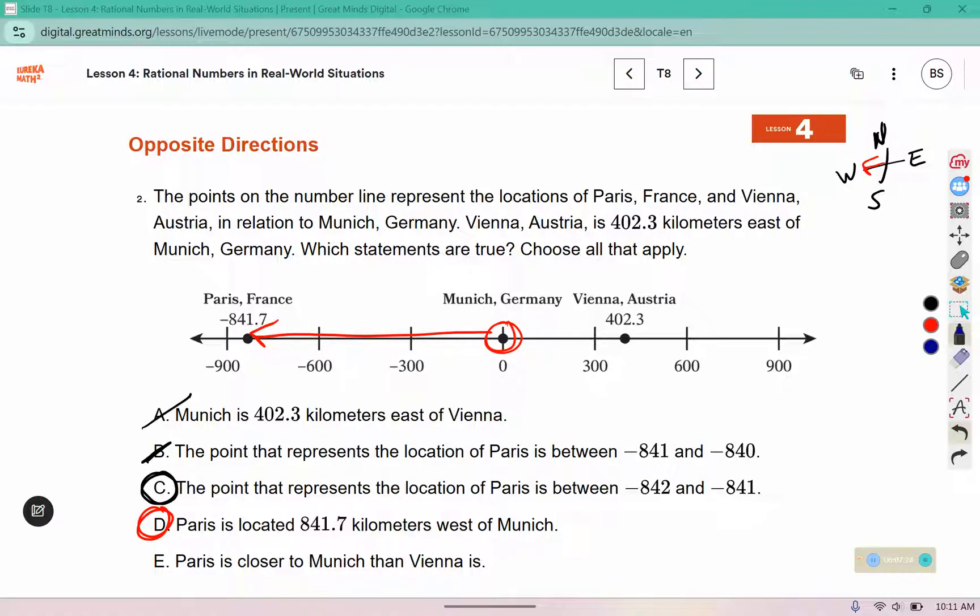Paris is closer to Munich than Vienna is. If we look at where Munich is, is this distance to Vienna or this distance to France? Which one of those is closer? Vienna is closer to Germany. So E says Paris is closer to Munich, Germany, and that is false.